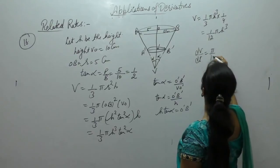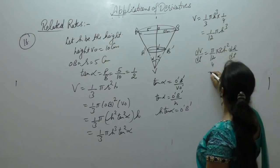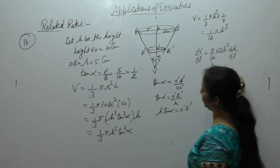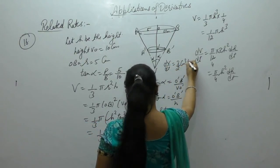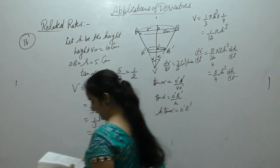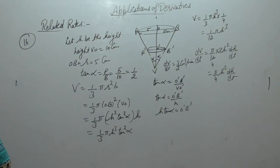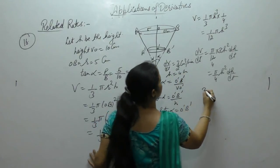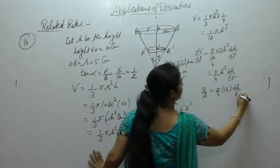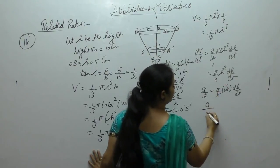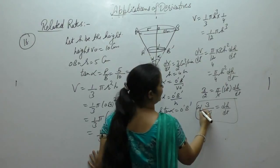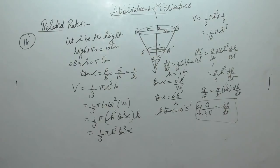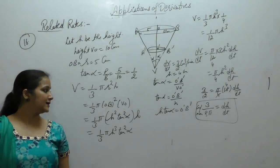Differentiating: dV/dt = (π/12) × 3h² × dh/dt. Given dV/dt = 3/2 cm³/min and depth h = 4 cm: 3/2 = (π × 16/4) × dh/dt = 4π × dh/dt. So dh/dt = (3/2)/(4π) = 3/(8π). Therefore the depth of water is increasing at the rate of 3/(8π) cm per minute.